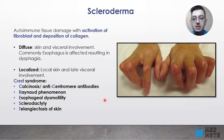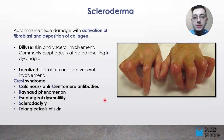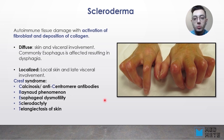Scleroderma has two types: diffuse or localized. In the diffuse type, the skin is diffusely affected, and we also have early visceral involvement. The esophagus is commonly affected, which results in dysphagia.